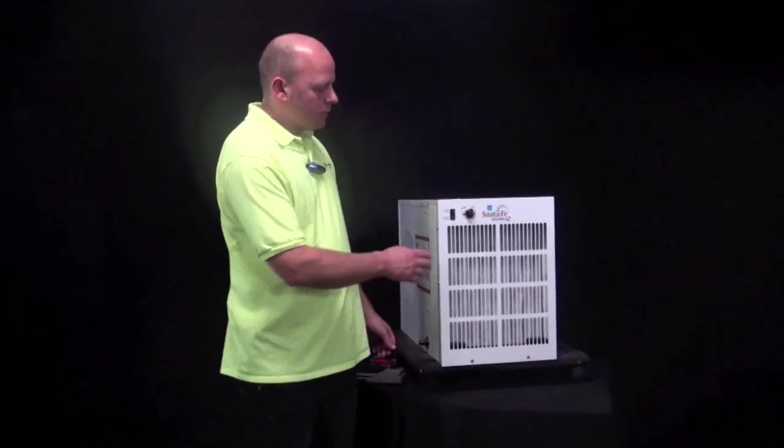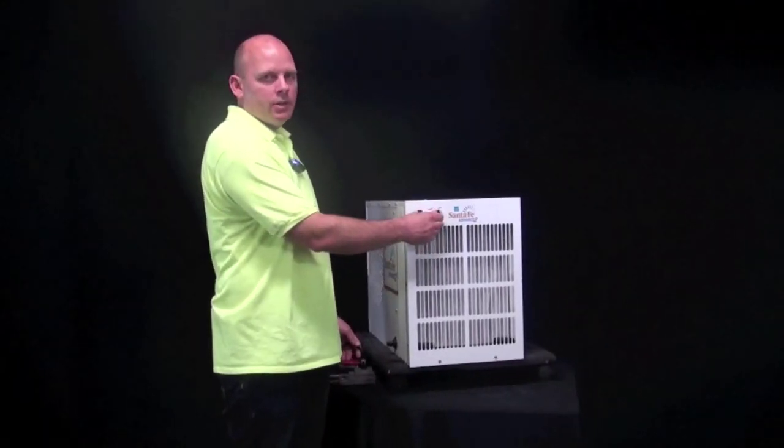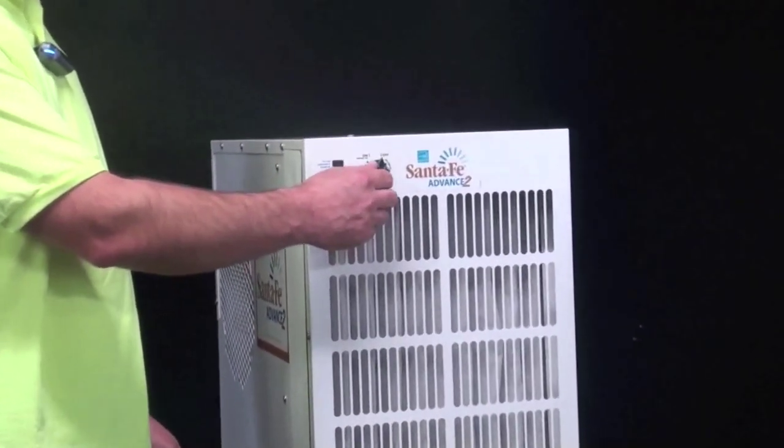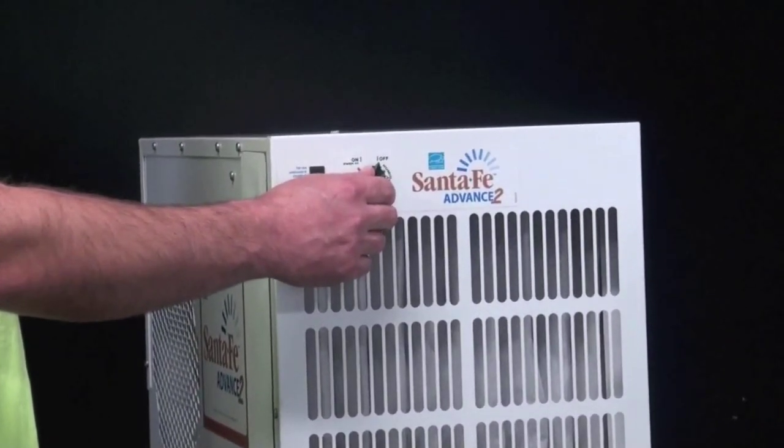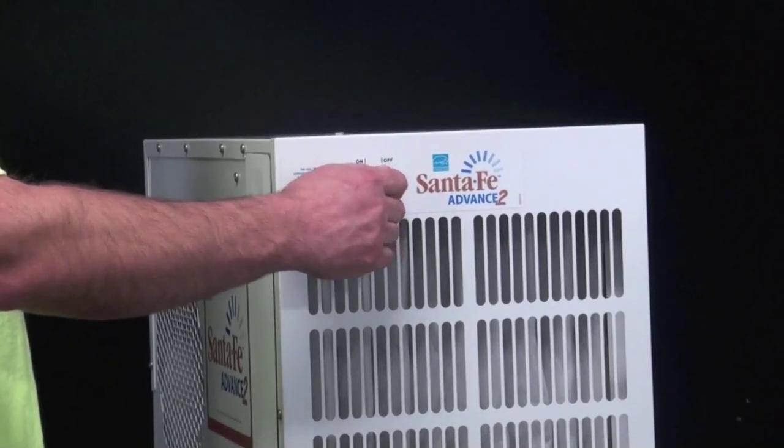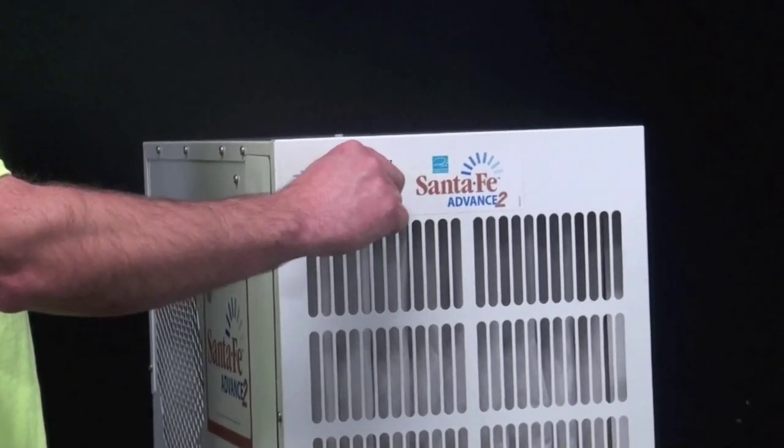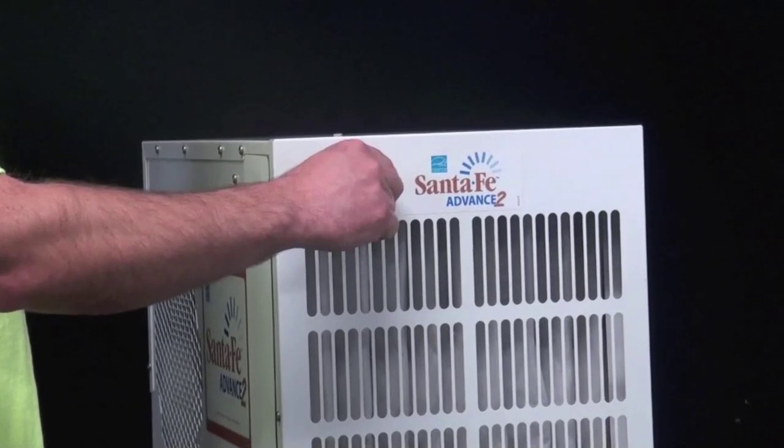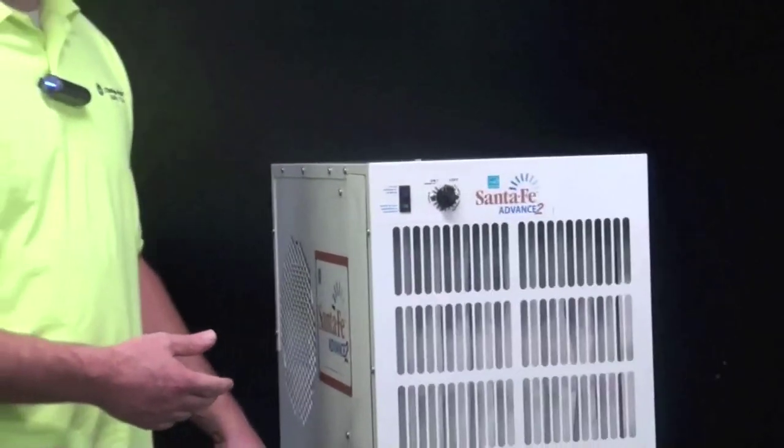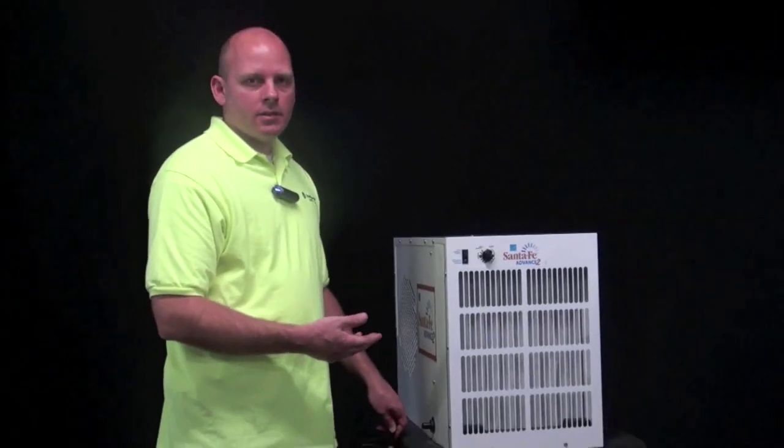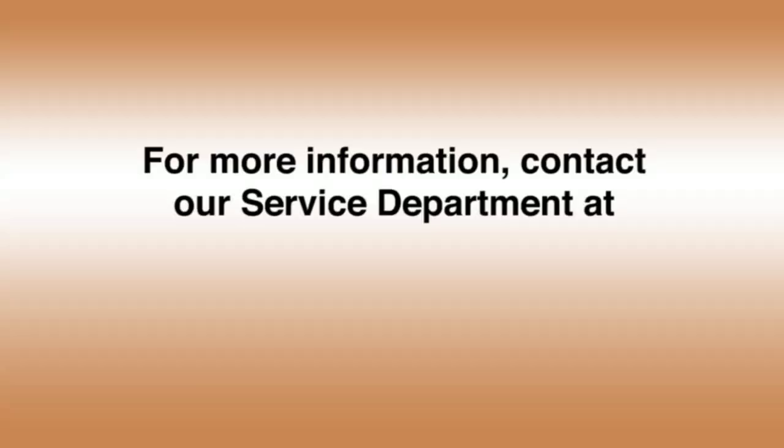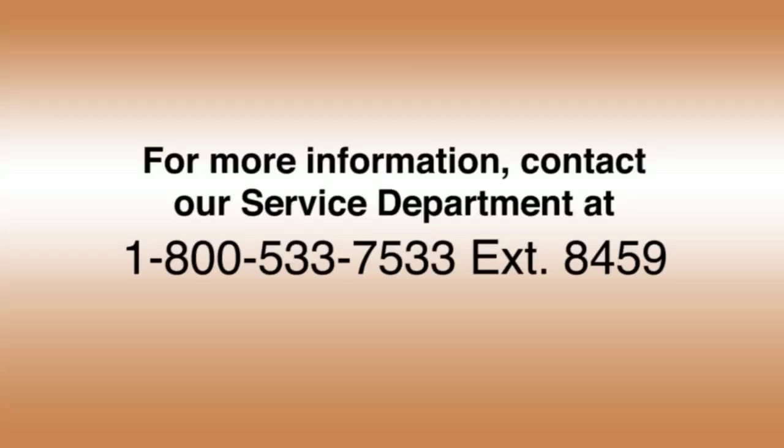Now, when you turn the humidity control knob, you're going to want to turn it slow and once it reaches close to what the humidity level is in your space, the dehumidifier should turn on. So, the dehumidifier turned on, so now that tells us that the dehumidistat did solve the problem. Thank you.